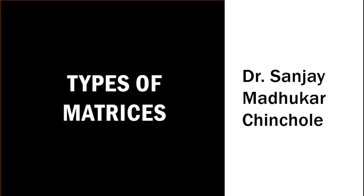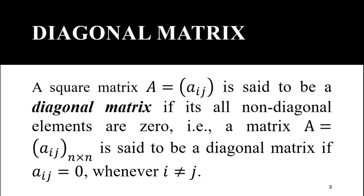A square matrix A, equal to a_ij, is said to be a diagonal matrix if all its non-diagonal elements are zero. That is, a matrix A equal to a_ij, where the number of rows and number of columns are the same, is a square matrix, and it is said to be a diagonal matrix if a_ij equals 0 whenever i is not equal to j.